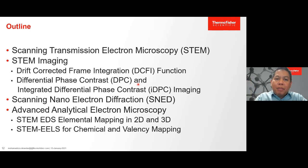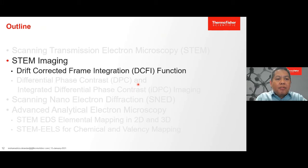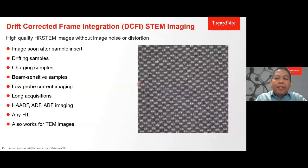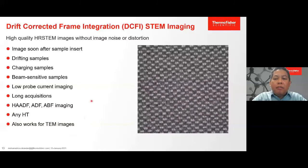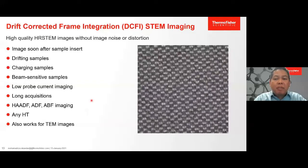Now I move to the next topic. After talking about the hardware, I'll now look at the application of software — how good hardware combined with good software can give better image quality. The first technique is drift-corrected frame integration or DCFI. Obtaining a high quality STEM image often takes about 10 to 30 seconds. During this time, there are many cases where effects of specimen movements due to charging, drift, noise, and vibrations become problems.